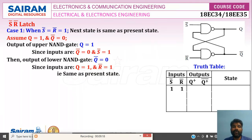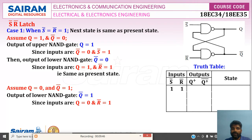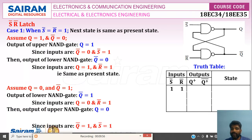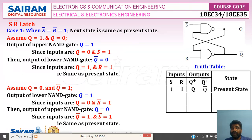So we assumed Q=1, Q-bar=0 and got the same — same as present state. Again, if we assume Q=0 and Q-bar=1: Q=0 is connected to the lower NAND gate, so Q-bar output is 1 since inputs are Q=0 and R-bar=1. Q-bar=1 is connected to the upper NAND gate with S-bar=1, so output is 0, meaning Q=0. Same as present state. So when both inputs are 1,1, the latch maintains the same present state.